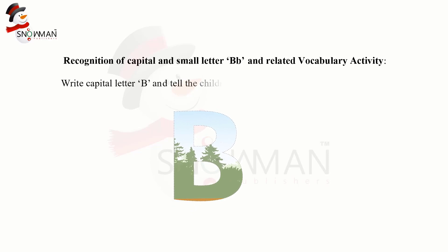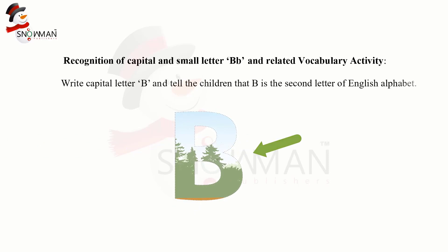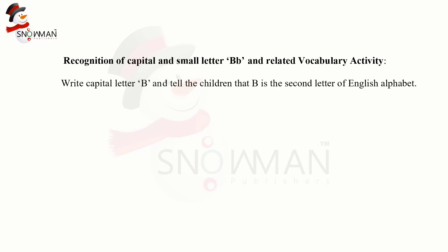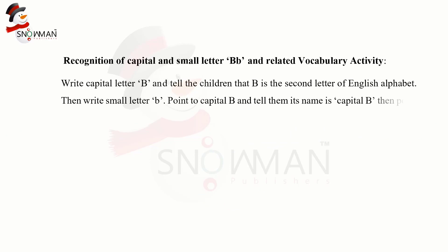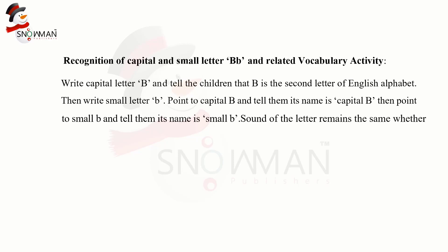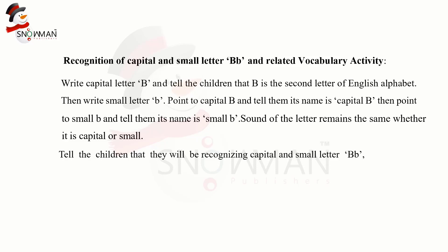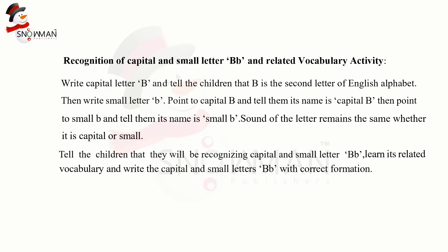Recognition of capital and small letter B and related vocabulary activity: write capital letter B and tell the children that B is the second letter of the English alphabet. Then write small letter B. Point to capital B and tell them its name is capital B; then point to small B and tell them its name is small B. The sound of the letter remains the same whether it is capital or small. Tell the children they will be recognizing capital and small letter B, learning its related vocabulary, and writing the letters with correct formation.